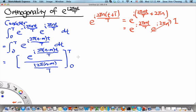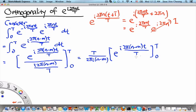Let's see what we get. First of all, we have T over 2π i (n minus m). And then we have e to the i 2π (n minus m)t over capital T evaluated at T and 0.